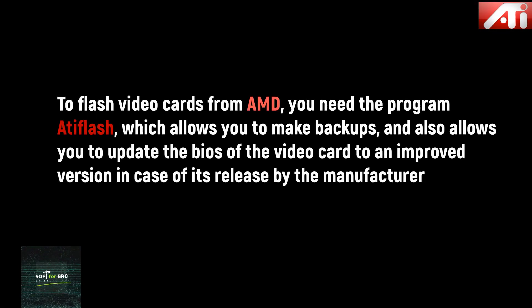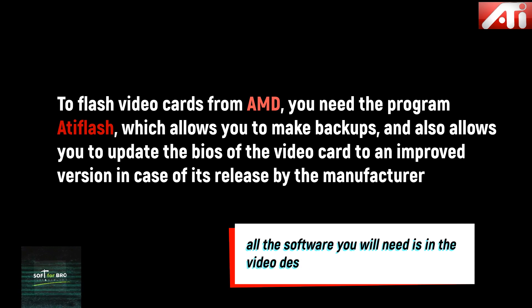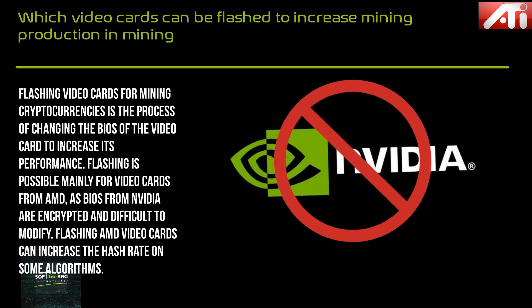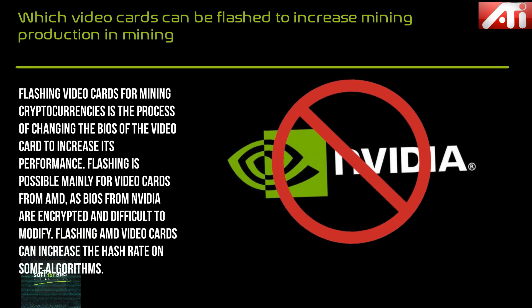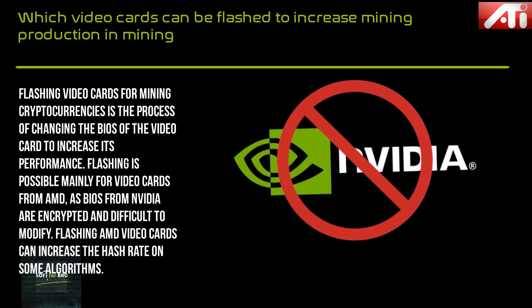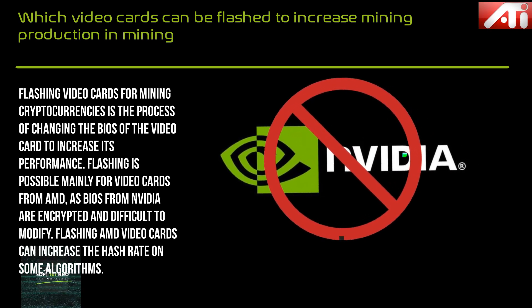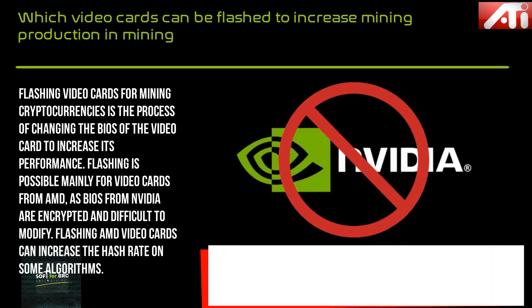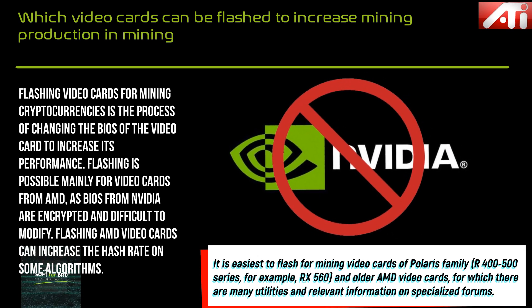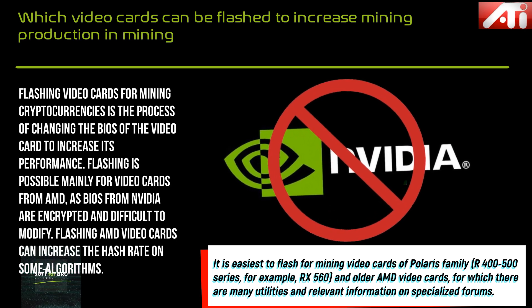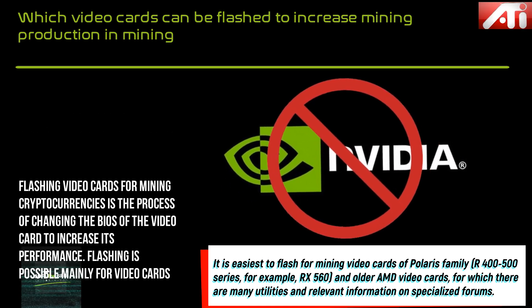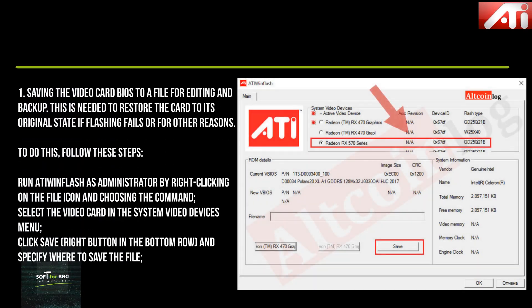To flash video cards, you need the program ATIFlash, which allows you to make backups and also update the BIOS of the video card to an improved version upon release by the manufacturer. Flashing video cards for mining cryptocurrencies is the process of changing the BIOS of the video card to increase its performance. Flashing is possible mainly for AMD video cards, as NVIDIA BIOS is encrypted and difficult to modify. Flashing can increase the hash rate on some algorithms.